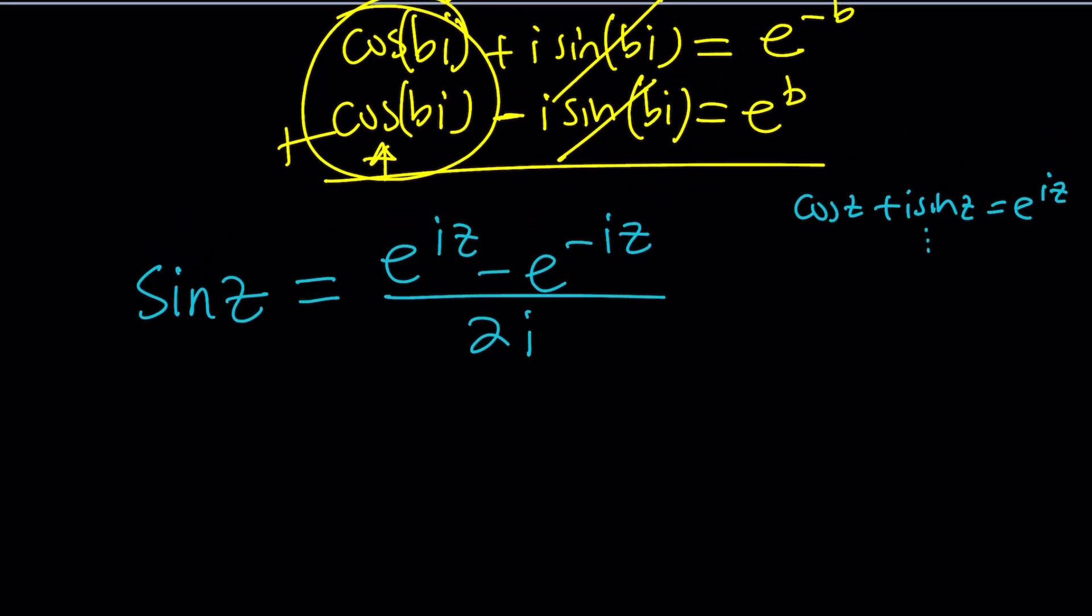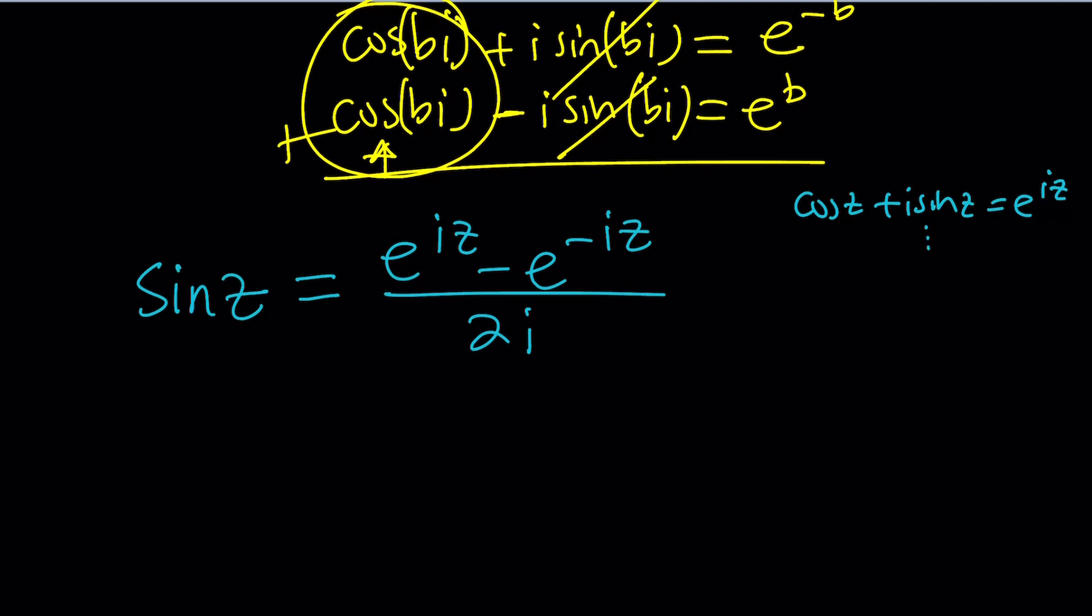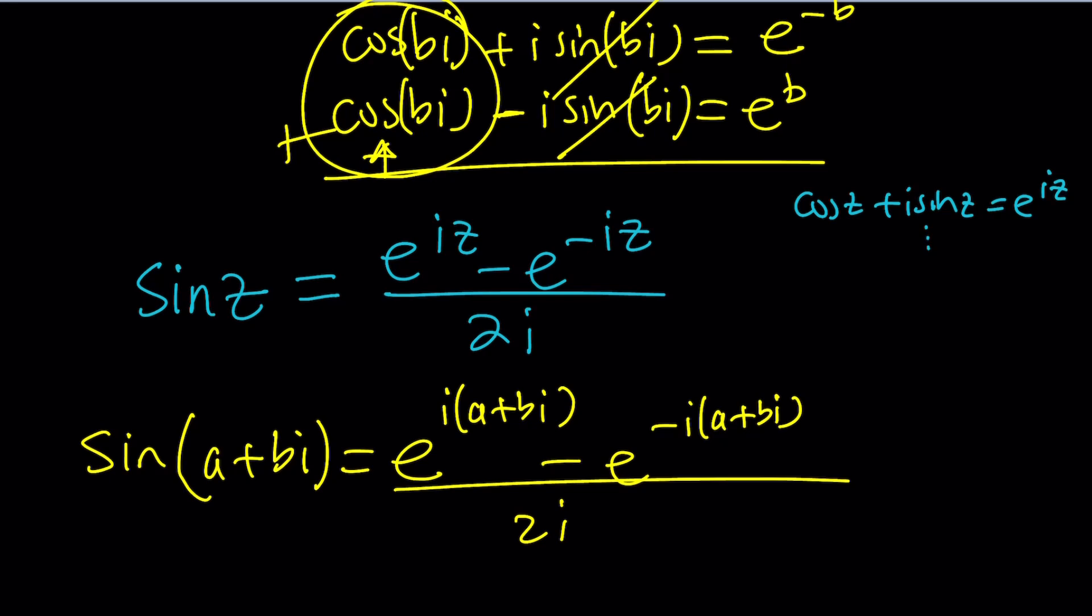And now we're going to do the following. Replace z with a plus bi. Let's do it. When we do, we get sine of a plus bi equals e to the power i times a plus bi minus e to the power negative i times a plus bi divided by 2i. And we want this to be zero.